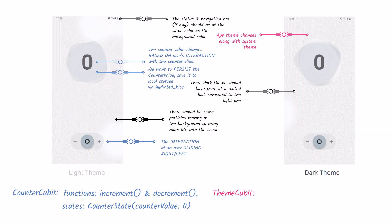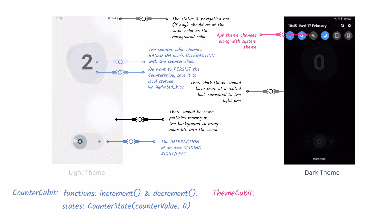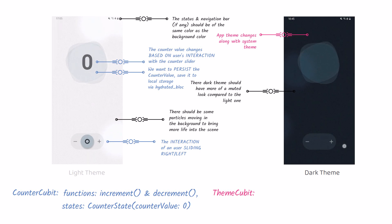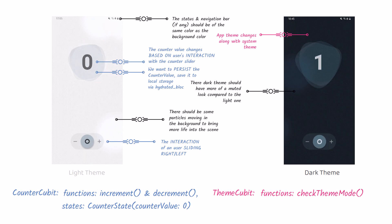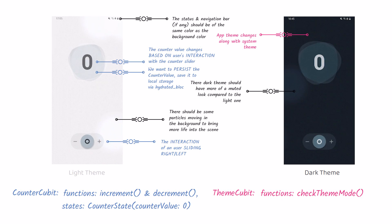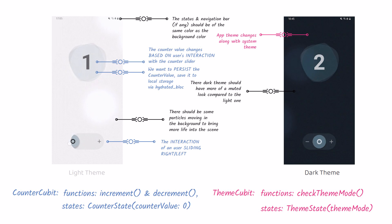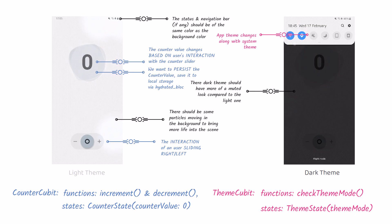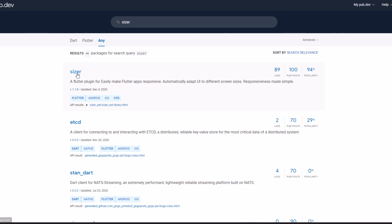The widget containing the counter value in our UI will listen to this stream of states and rebuild accordingly. We also want to persist the counter value to storage so that we won't lose it whenever the application is restarted — we'll use Hydrated Bloc for that. Regarding the theme cubit, it will contain a single function called CheckThemeMode, which will check whether the current system theme is set to light or dark. We also have to listen to whenever the system theme changes even when the application is running, so the theme of the app changes in real time — for that, we may need to use some observers to the platform brightness. Apart from this, we'll probably use some pub.dev packages to cope with the animations and responsiveness of our app.